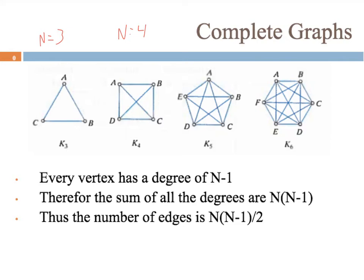Once again, just n minus 1, so 4 minus 1 making 3. You can do the same thing with K5 and K6.